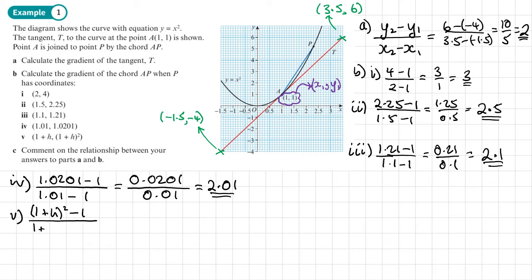So this is part 5. It'll be (1 plus h) all squared minus 1, so we're working out exactly the same way, over 1 plus h minus 1. To work out what the top bit is going to be, we need to expand the brackets.